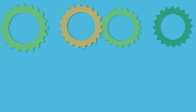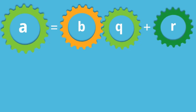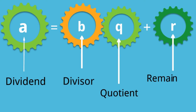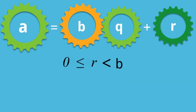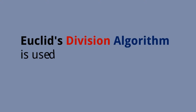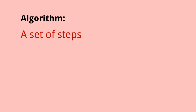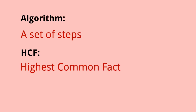We have already learned Euclid's Division Lemma: a = bq + r, where a is the dividend, b is the divisor, q is the quotient, and r is the remainder, with r greater than or equal to 0 but less than b. Euclid's Division Algorithm is used to find the HCF of two numbers. An algorithm means a set of steps, and HCF stands for Highest Common Factor.